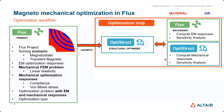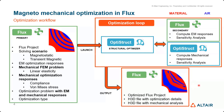Once you have your optimum design, the optimized Flux project opens and you can see how the structure has changed. Along with that, all results are available as .h3d files in the folder where you ran your optimization. This completes the workflow for magnetomechanical optimization in Flux.